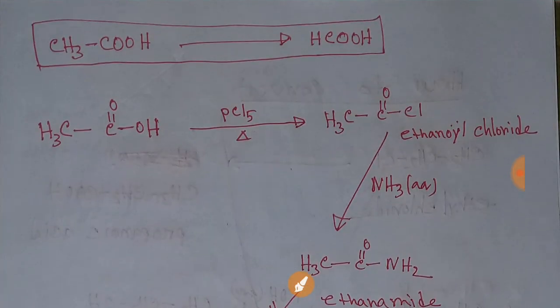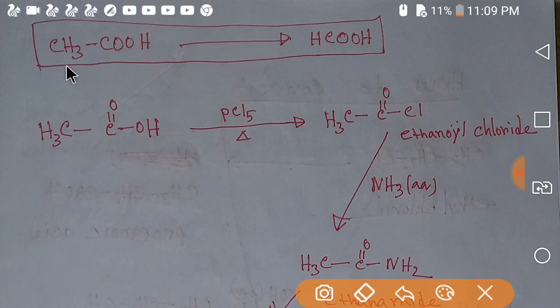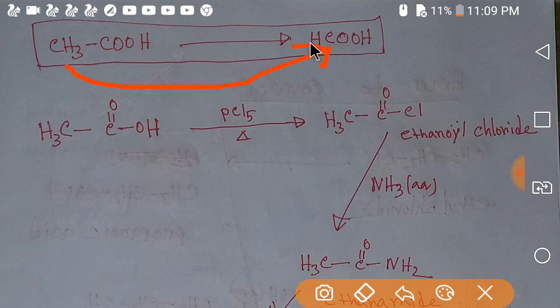Now we will learn how to convert ethanoic acid to methanoic acid. To convert ethanoic acid to methanoic acid, we have to deduct one carbon. What is the mother compound to deduct one carbon in the chain? The mother compound is amide. So we have to convert this compound to amide.